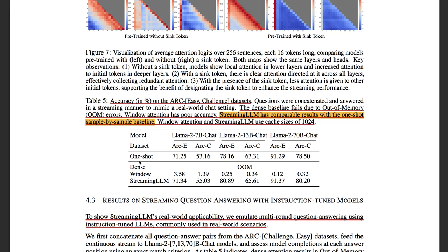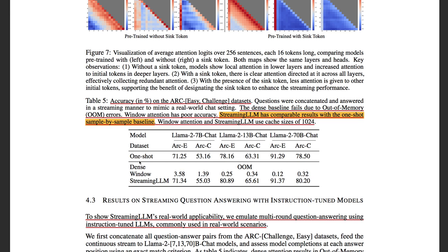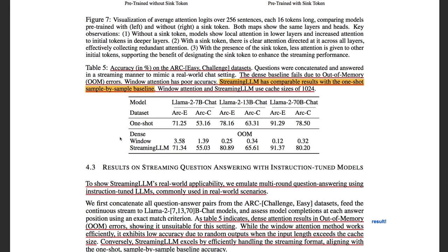The baseline model is called sample by sample one shot. My understanding of that is instead of feeding the model with a full super long context,